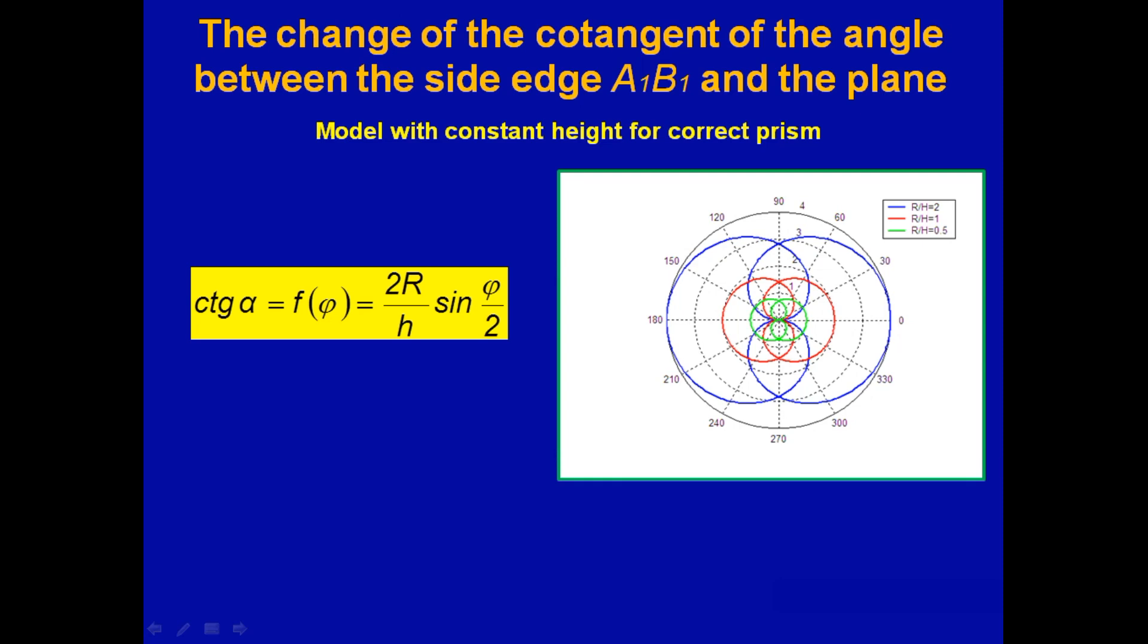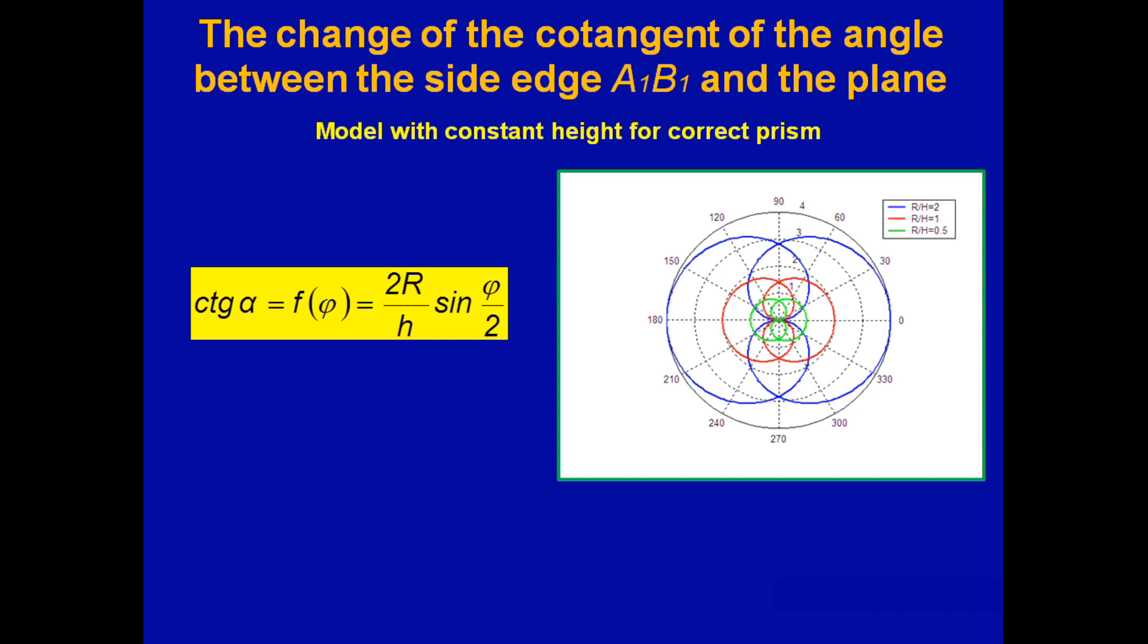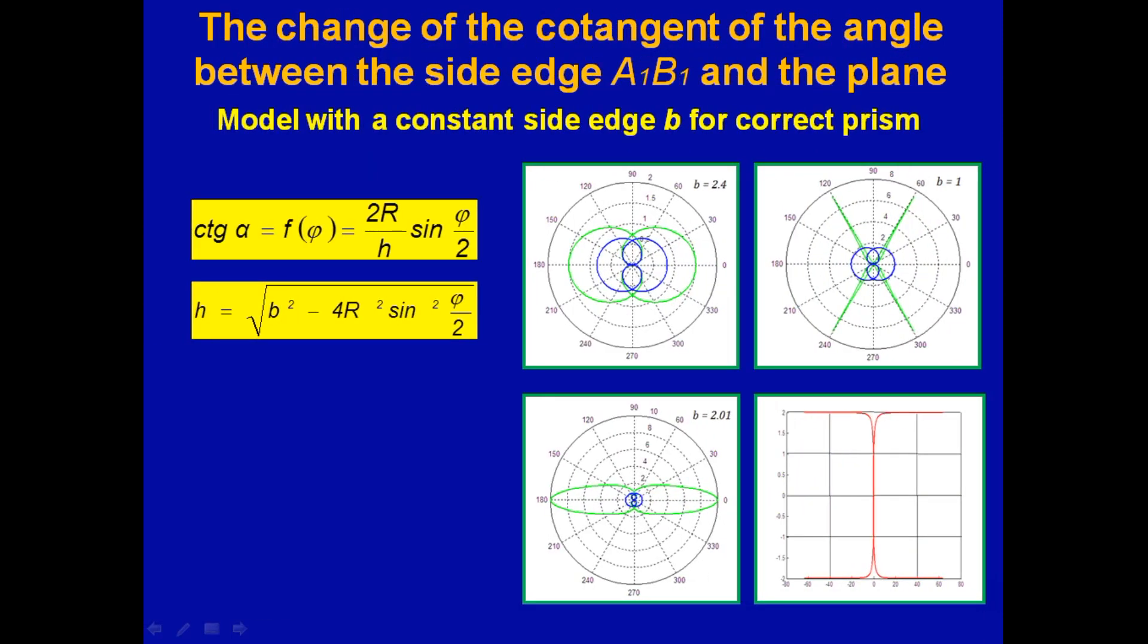We also proved that the cotangent of the angle between the side edge and the base for the model with the constant height satisfies the equation of Guido-Grandi rose. And for the model with the constant length of the side edge, the cotangent satisfies the equation of a different Guido-Grandi rose.